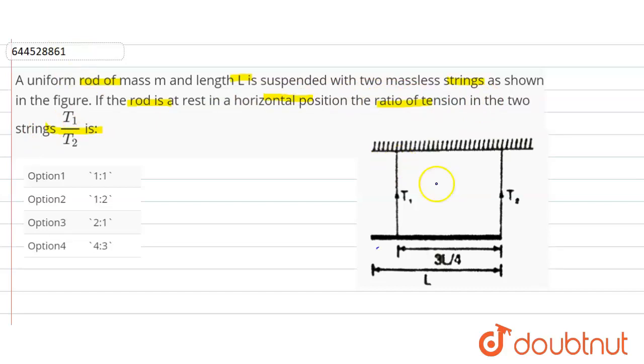So here see, this is T1 and T2, and this rod is here. This length is 3L/4 and this total length is L.